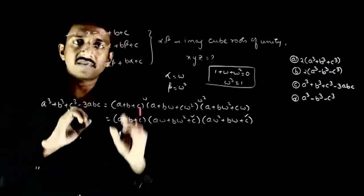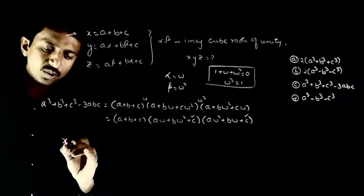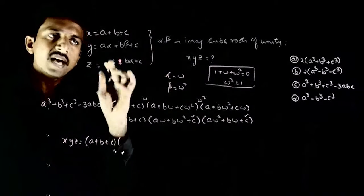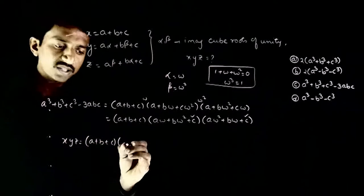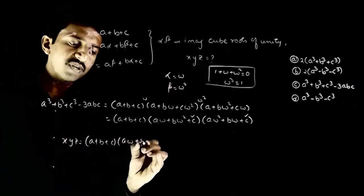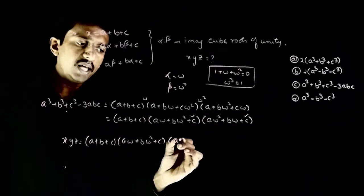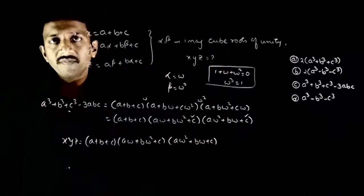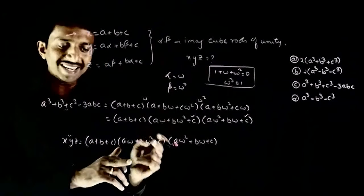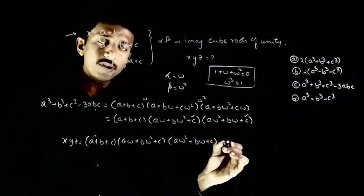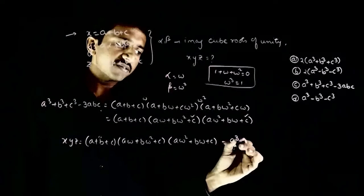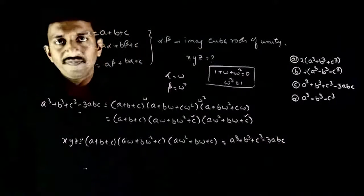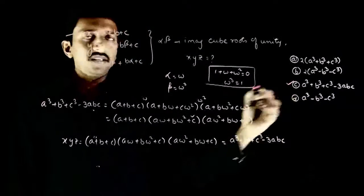Now if you see this expression, x into y into z is nothing but: (a plus b plus c) — since alpha and beta are omega and omega square — into (a·omega plus b·omega square plus c) into (a·omega square plus b·omega plus c). From the formula, you can see that these two expressions are exactly the same. So x·y·z equals a cube plus b cube plus c cube minus 3abc. Option C is the right answer.